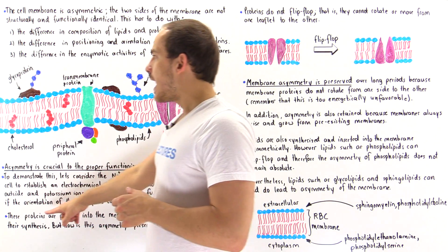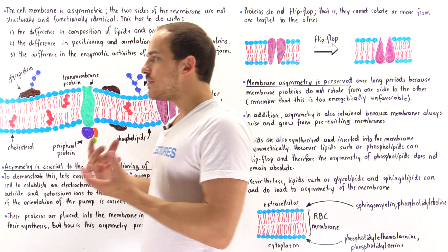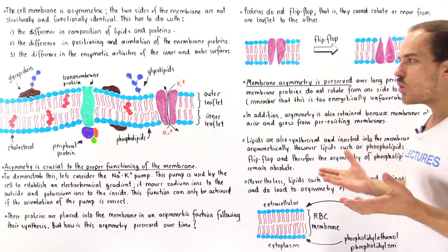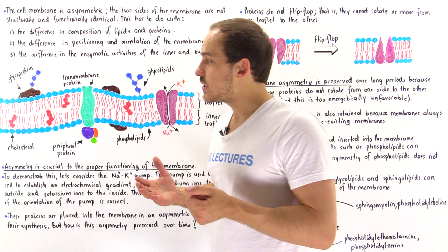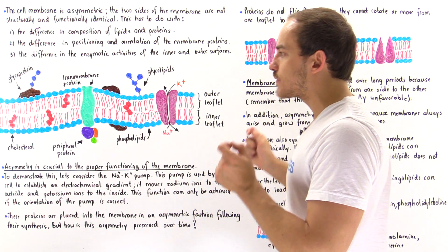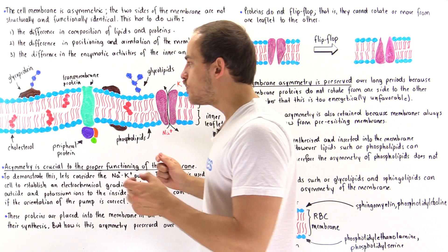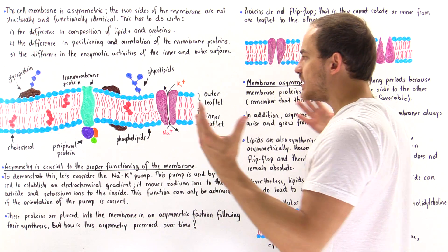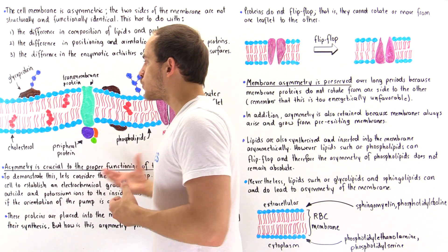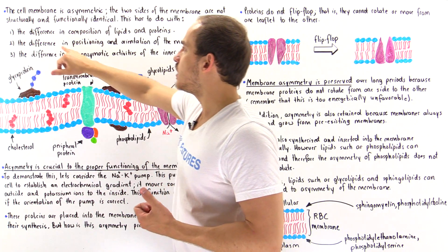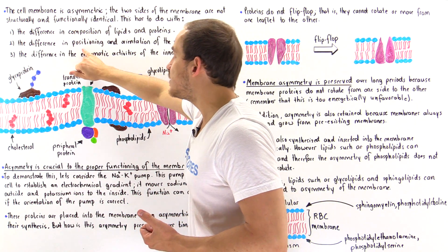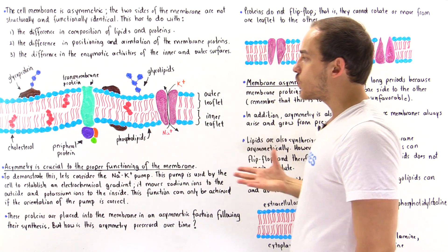When we synthesize these proteins in the ribosomes of our cell, these proteins as well as lipids are placed into the membrane in an asymmetric fashion. We essentially place these proteins asymmetrically, and so we create this asymmetry in the membrane as a result of the difference in the composition, positioning, and orientation of the proteins.